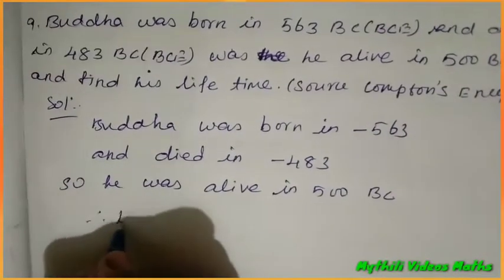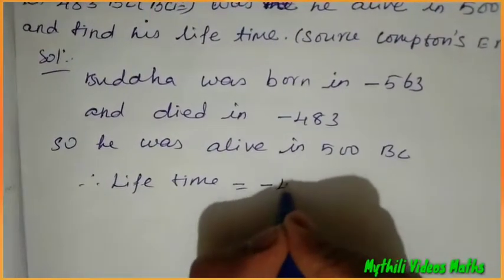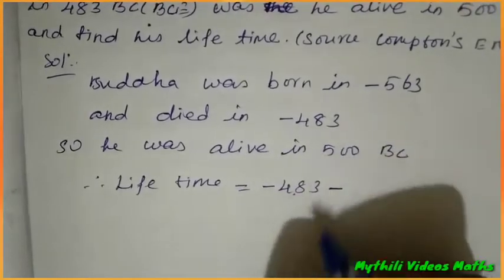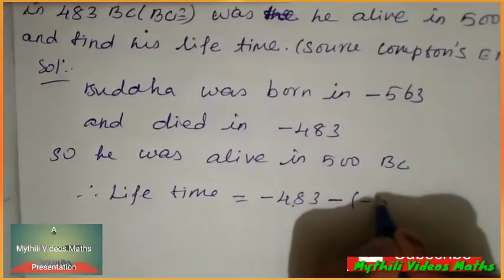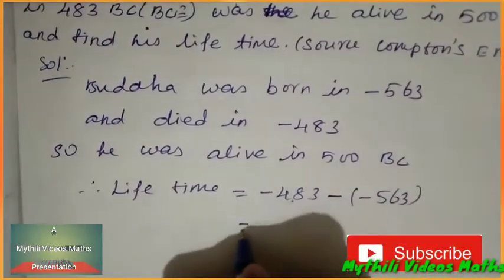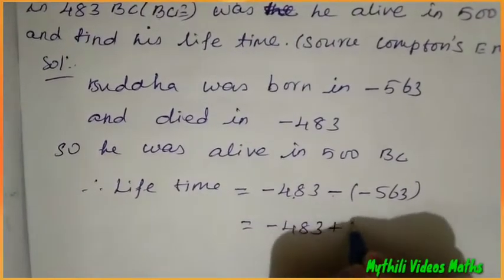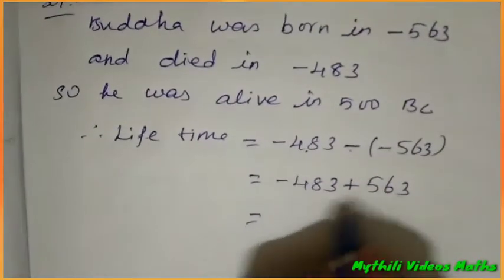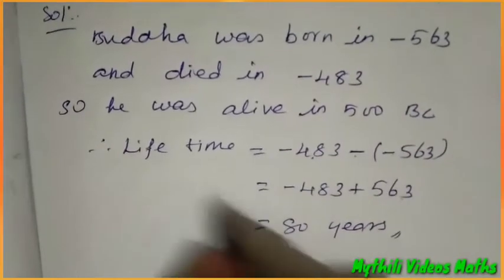Therefore, lifetime equals minus 483 minus of minus 563. This is equal to minus 483, and minus into minus is plus, so plus 563. When we subtract these two values, this equals 80. So 80 years is the lifetime for Buddha.